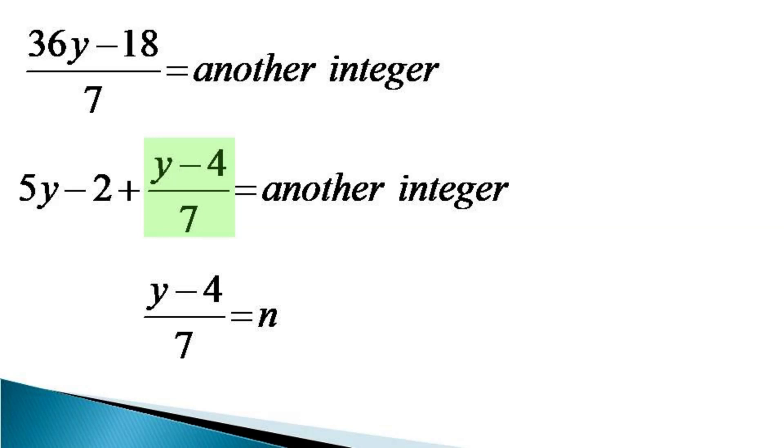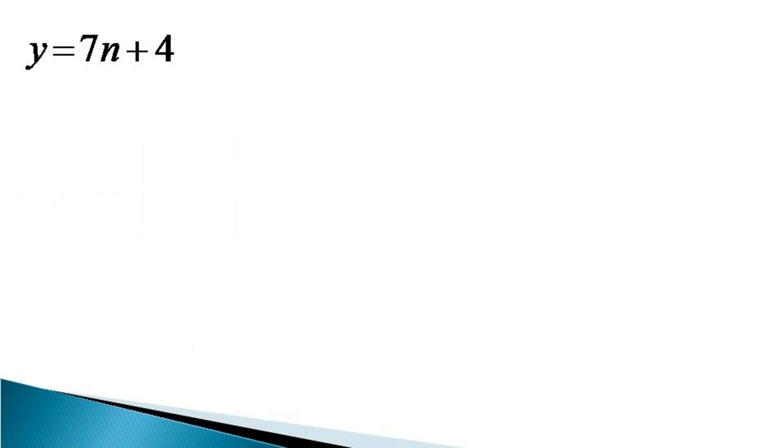This gives us the value of y as equal to 7n + 4, and putting this value in the original equation, which is cast in the form of an equivalent equation as x + y + (6y - 3)/7 = 31. This part (6y - 3)/7 can be any integer, either positive or negative.